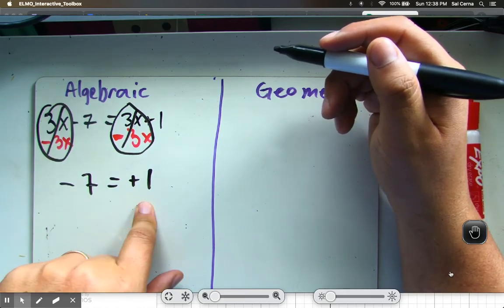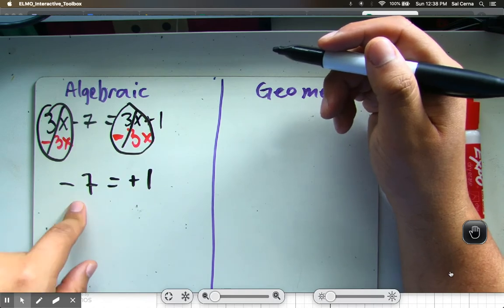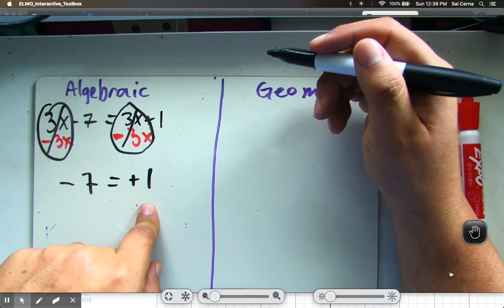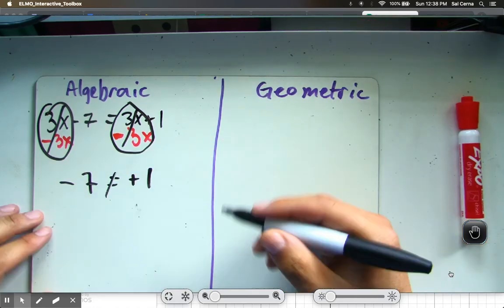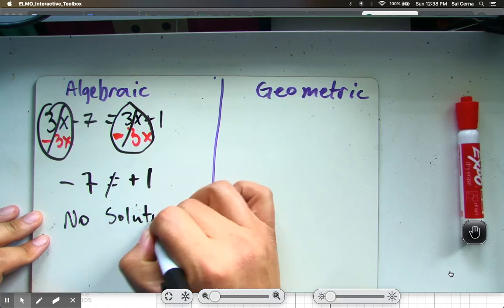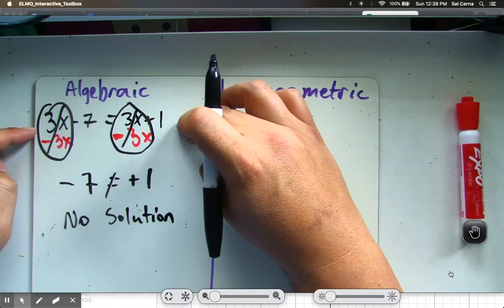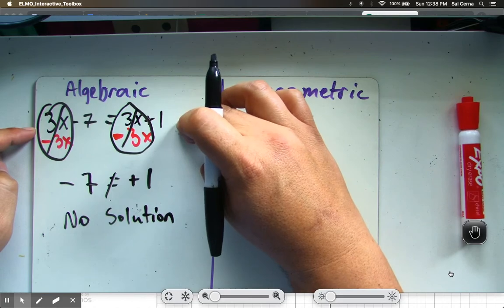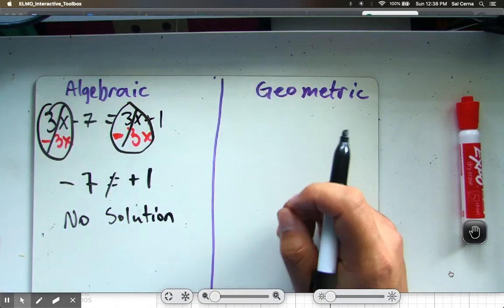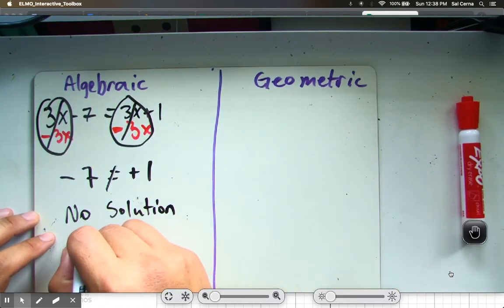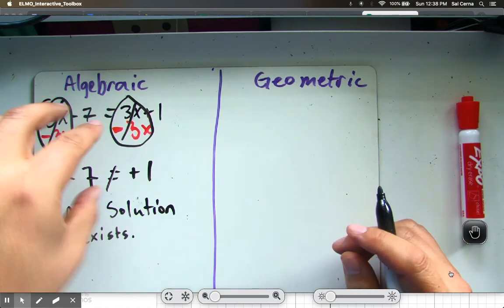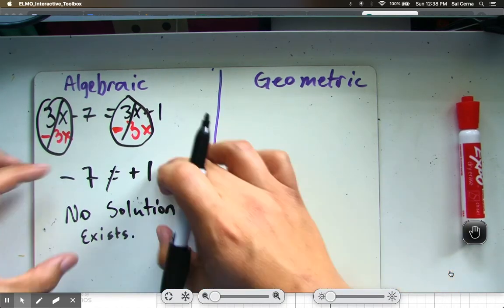Is negative 7 equal to 1? ¿Es este número real igual a este número real en cantidad? No, it's not. Therefore, not equal. So there is no solution for this equation. There's no value for x that I can choose that would set these two expressions equal to each other. No solution exists.